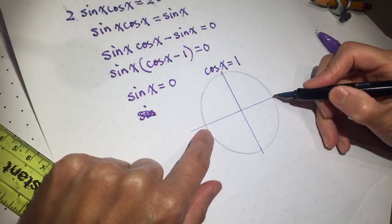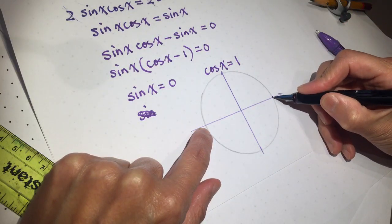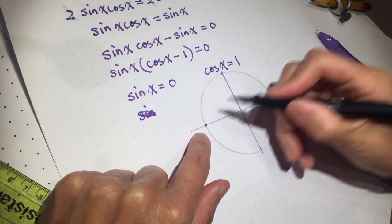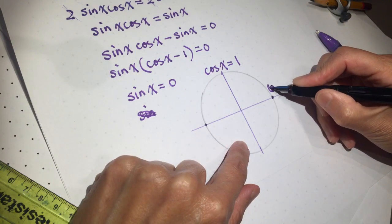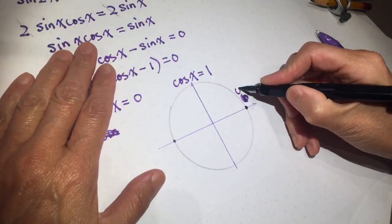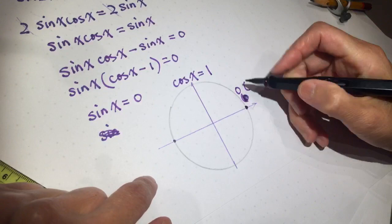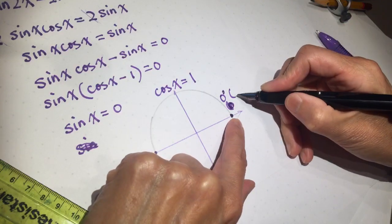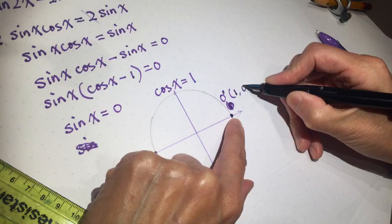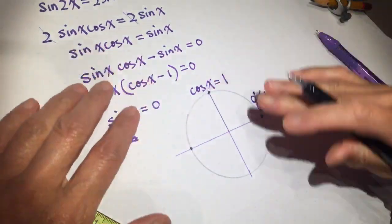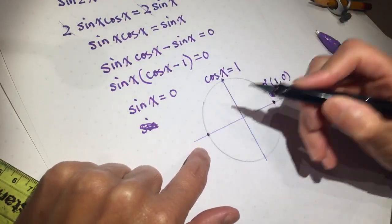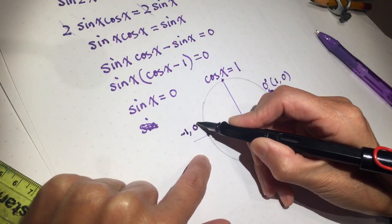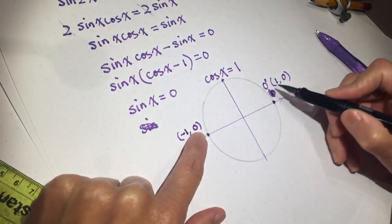So sin(x) is zero, it means y value is zero. On this point, the y value is zero. So this point, zero degrees, and the coordinate x = 1, y = 0, right? At this coordinate, x = -1, y = 0. So y is zero and y is zero.